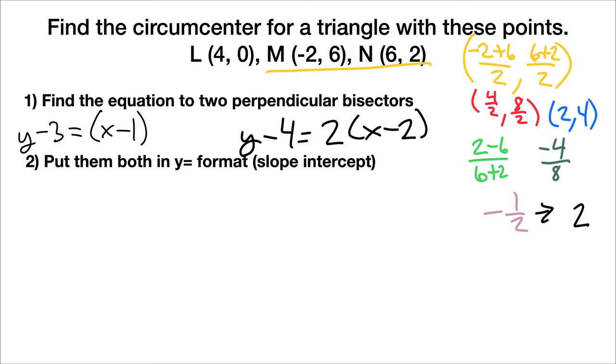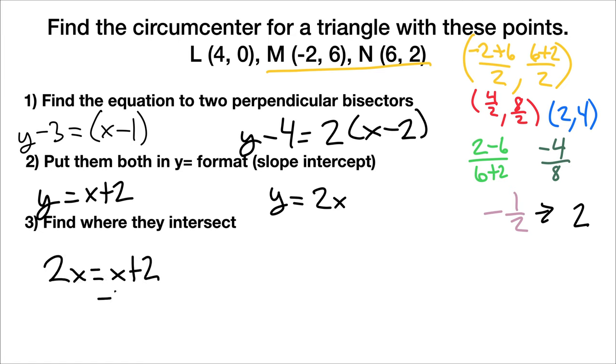Now we need to put them both in y equals format. So on our first one, we just add 3 to both sides, which ends up becoming y equals x plus 2. And on our second one, we have to first multiply it out. So y minus 4 is equal to 2x minus 4. But then I have to change it up a bit. I'm going to add 4 to both sides. That ends up becoming y equals 2x. Then I find out where they intersect. I could graph them both, but since I don't want to draw a graph on here, I'm going to just set them as equal to each other. 2x is equal to x plus 2. We subtract x from both sides. x equals 2. So now that I know the value of x, I want to plug it back in. I could do it to either one. I'm going to choose x plus 2. So y is equal to 2 plus 2, which means y equals 4, meaning our circumcenter is 2, 4.